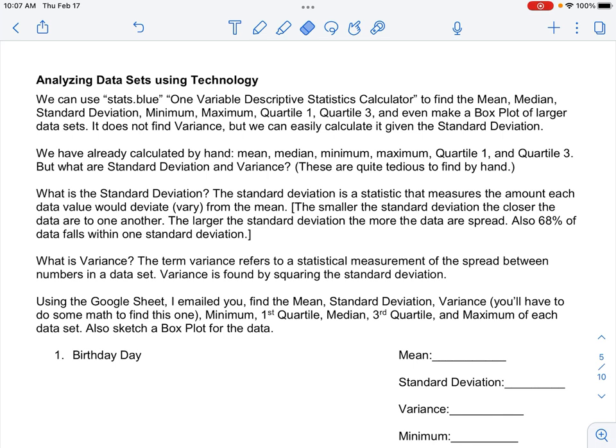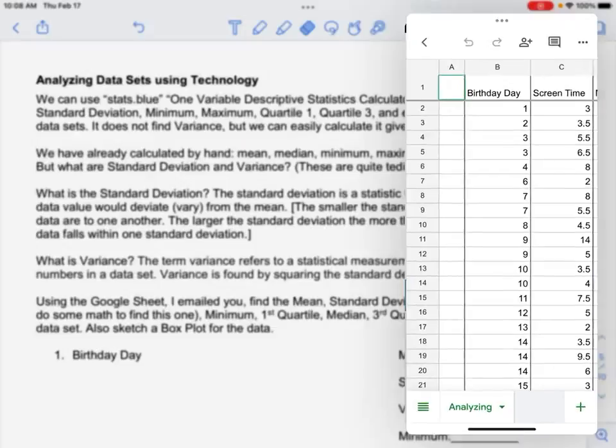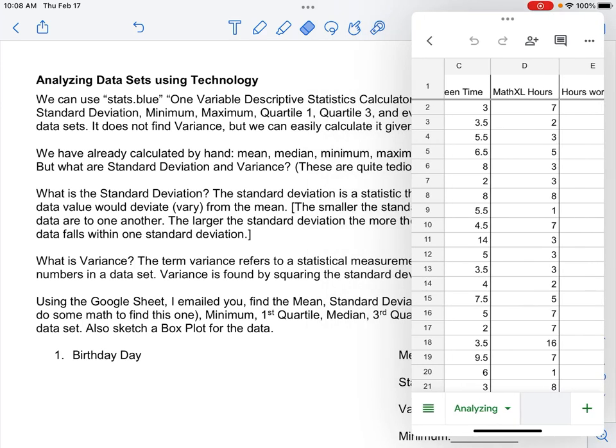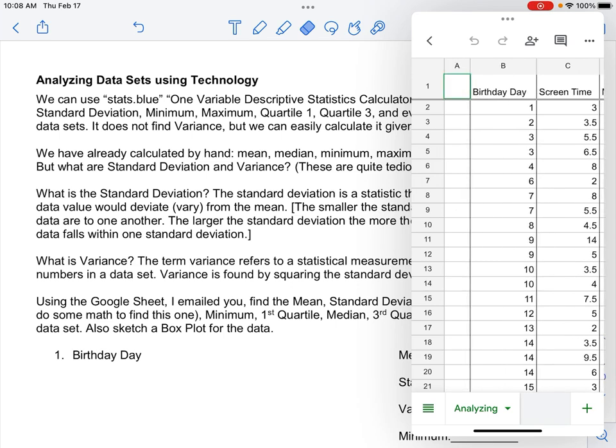So I emailed you a Google sheet, and we are going to use the data on that Google sheet to find the mean, standard deviation, variance. So we'll have to do math to find the variance. We'll also find the minimum, the first quartile, the median, the third quartile, and the maximum of each data set. And then we'll also create a box plot for all of these sets.